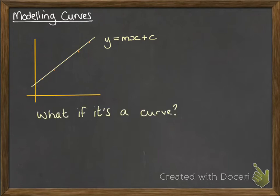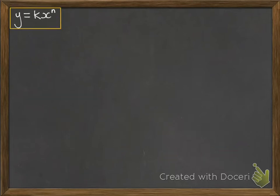But what happens if you have a curve? You can see that there's some sort of pattern to it, but it doesn't fit y equals mx plus c. Now that curve, we're going to look at two ways that we could model them. It could either be y equals kx to the power of n or y equals ka to the power of x.